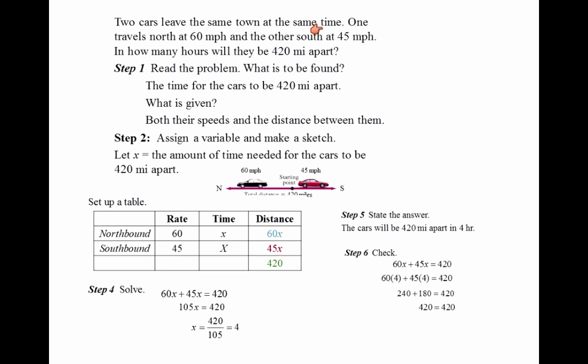Two cars leave the same town at the same time. One travels north at 60 miles per hour and the other south at 45 miles per hour. In how many hours will they be 420 miles apart? We have to read the question first. We need to assign a variable here. We want to let x equal the amount of time needed for the cars to be 420 miles apart. So x is the time.